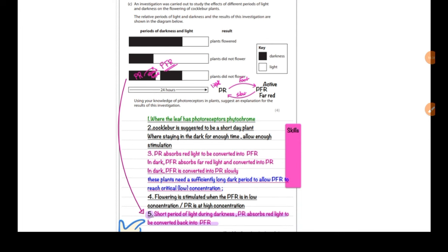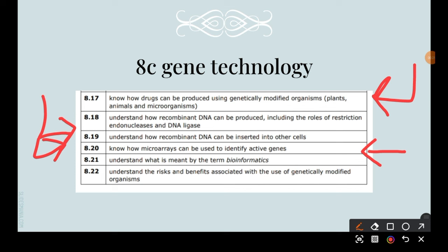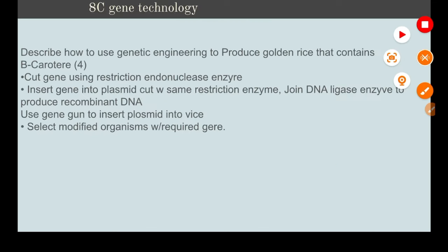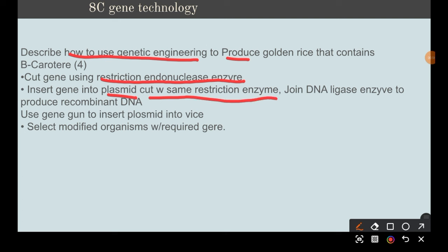The last lesson in the Unit 5 syllabus covers recombinant DNA. You need to know how recombinant DNA is produced and inserted into other organisms. The process: cut the desired gene using a restriction endonuclease enzyme; insert it into a plasmid cut with the same restriction enzyme; join the DNA with ligase enzyme to make recombinant DNA. A vector such as a gene gun is then used to insert the plasmid into the organism, and modified organisms are selected and cultured.